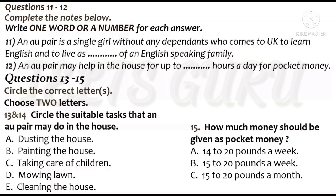What is an au pair? An au pair is a single girl without any dependents who comes to the UK to learn English and to live as part of an English-speaking family. She is not a domestic servant but may help in the house for up to five hours a day for pocket money. Suitable tasks would be light household work and taking care of children. She should have one day each week completely free and be free to attend language classes and religious services if she wishes. Pocket money should be between £15 and £20 per week and she should have her own room.